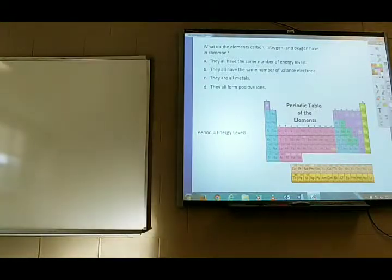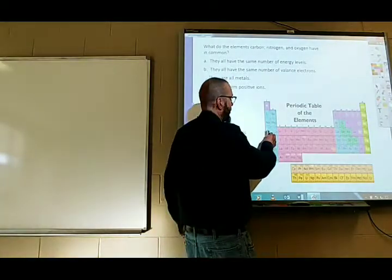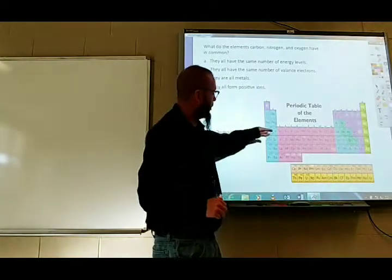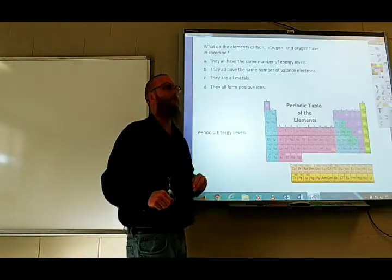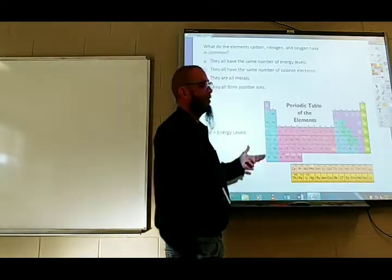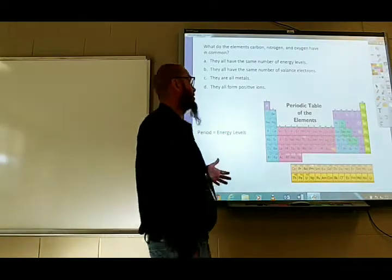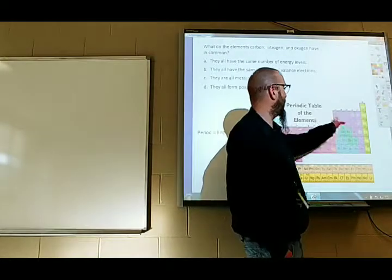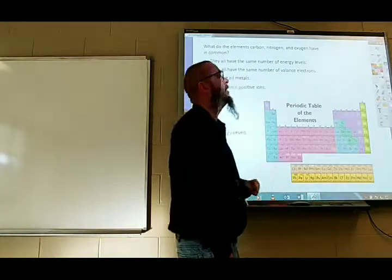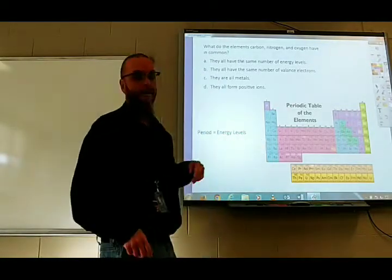You have to understand that all the elements in a period have the same number of energy levels — that is the period trend. So elements in period four, from potassium all the way to krypton, all have four energy levels. Period two elements, from lithium to neon, all have two energy levels. The group trend is valence electrons: group 1 has 1, group 2 has 2, group 13 has 3, 14 has 4, 15 has 5, 16 has 6, 17 has 7, and 18 has 8. The group trend is valence electrons; the period trend is energy levels.